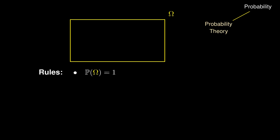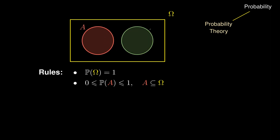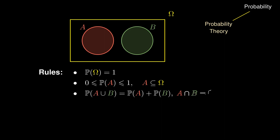Furthermore, if we choose a smaller subset of outcomes and denote this set by the event A, when conducting an experiment, the probability that we end up in event A must be between 0 and 1. Furthermore, if we consider yet another subset of distinct outcomes in event B and conduct an experiment, the probability that the outcome lies in event A or event B is the sum of the constituent probabilities.